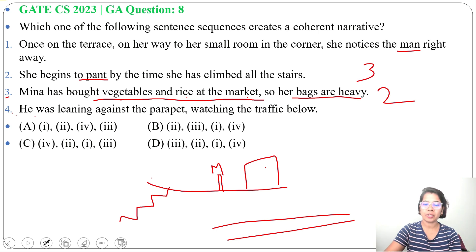Next, on the terrace, on her way to the small room in the corner, she noticed the man. So she noticed a man is standing near her room on the terrace.